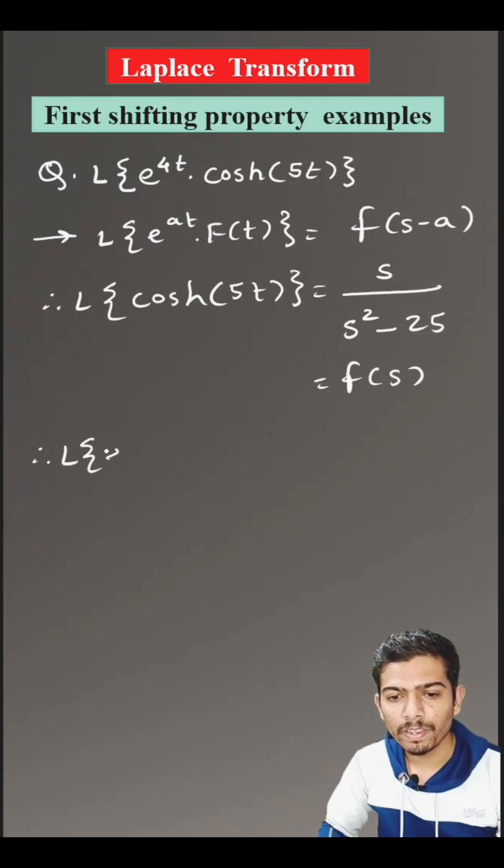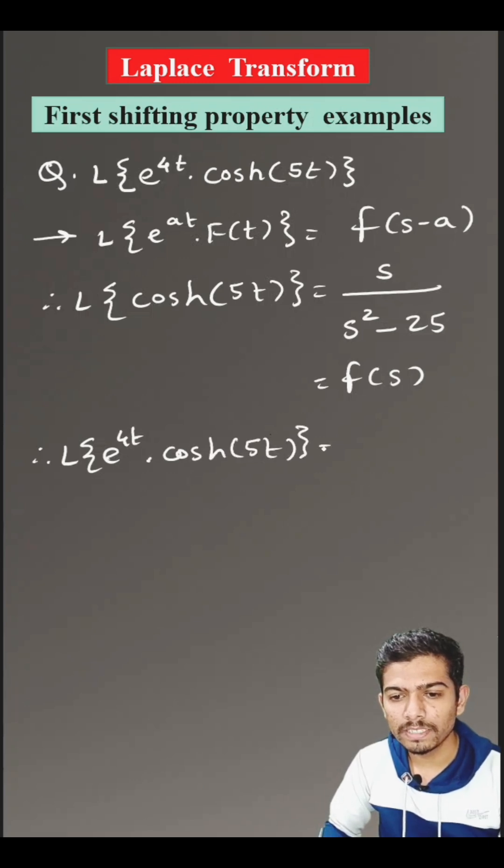Therefore, Laplace transform of e raised to 4 t into hyperbolic cos of 5 t is equals to f of s minus 4.